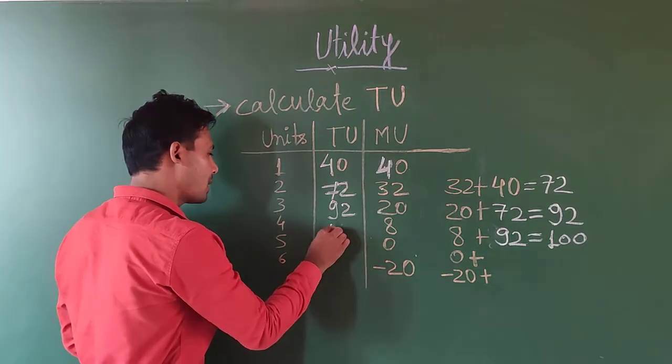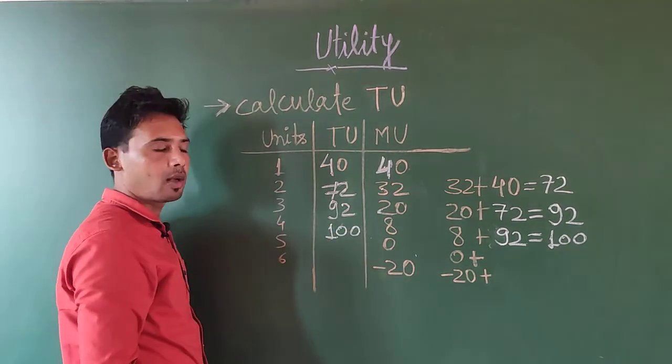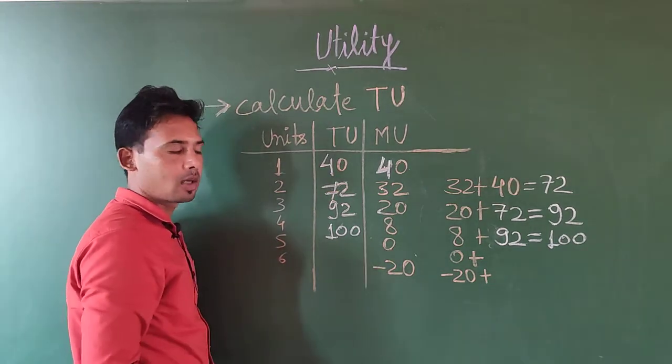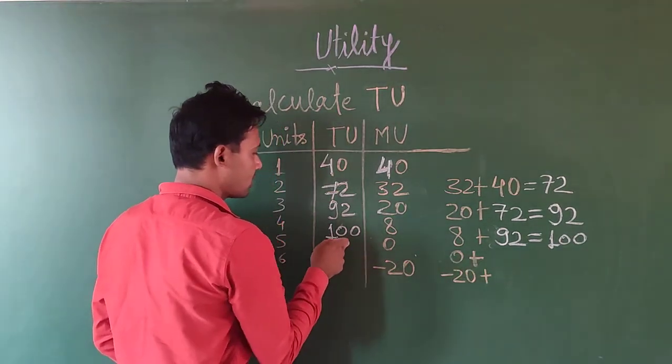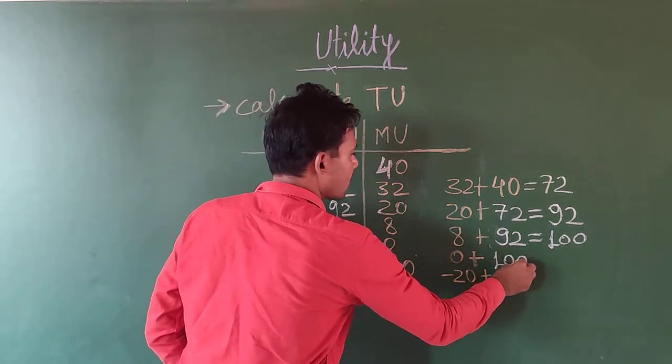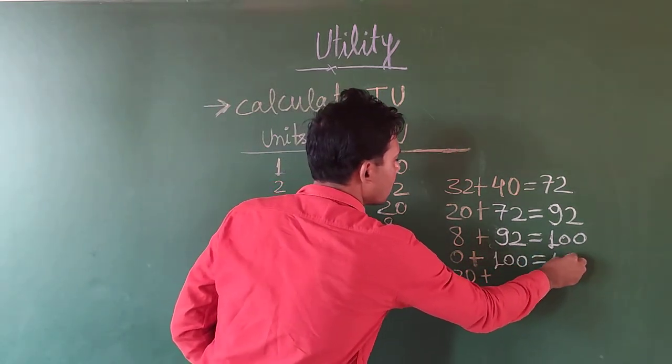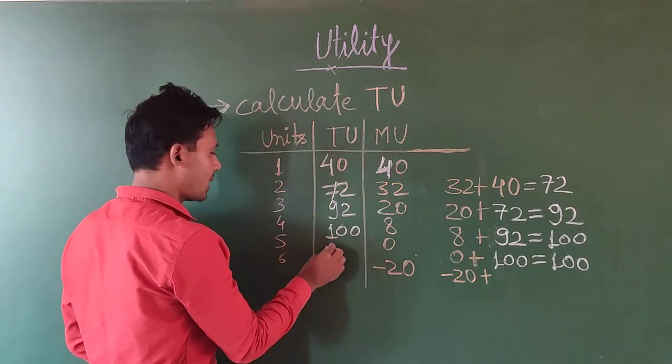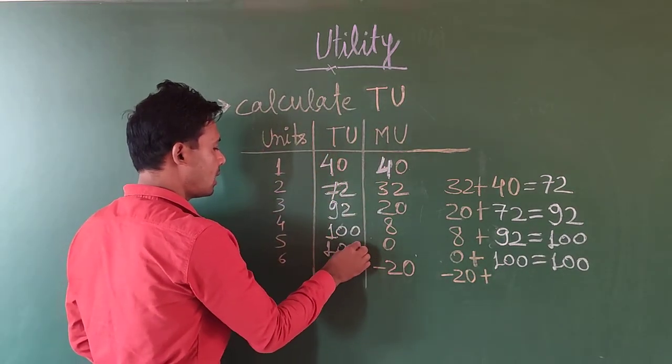Now 0 is given, so 0 plus this 100 is equal to once again 100. So we have to write down here 100.